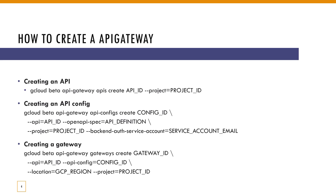Creating an API gateway in GCP is basically a three-step process. First, you need to create something called an API. Once you've created an API, you need to create something called an API config. The API config would contain all the configuration to the back-end services — it's basically a swagger file which will have all the information required for the API gateway to connect to the back-end.